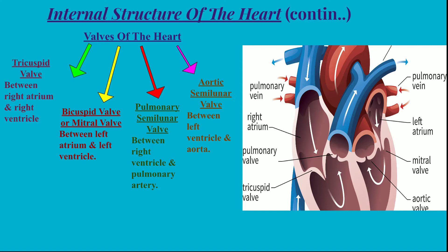There are four types of valves present in our heart. First is the tricuspid valve, which is between the right atrium and the right ventricle. Then the bicuspid or mitral valve, which is between the left atrium and the left ventricle. Then the pulmonary semilunar valve, which is at the opening of the pulmonary artery from the right ventricle.